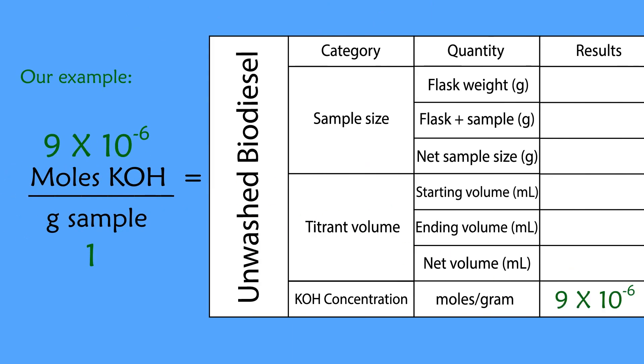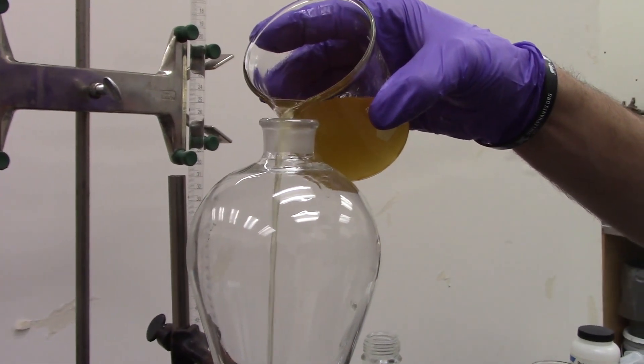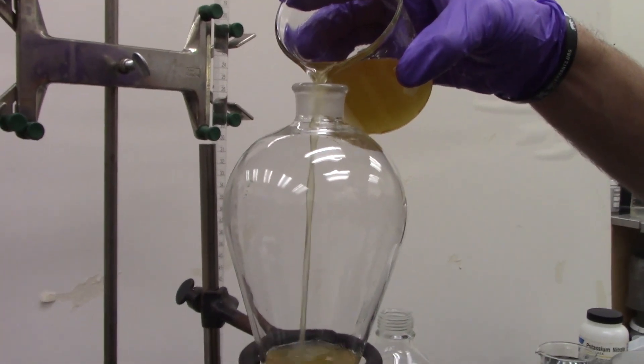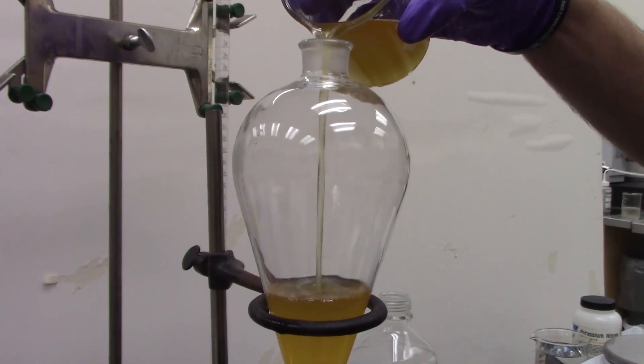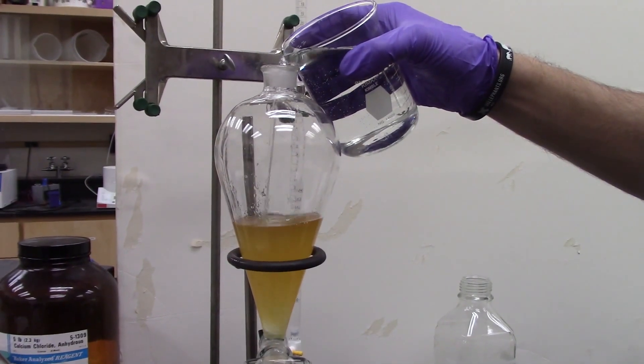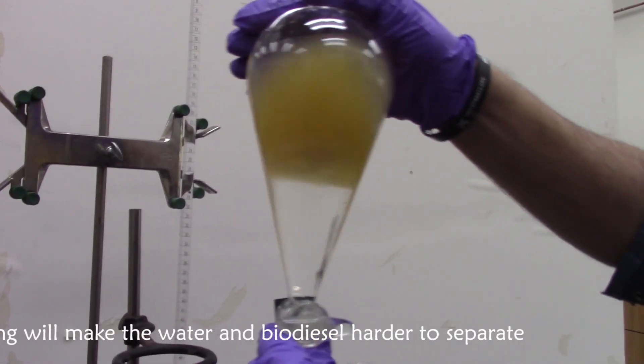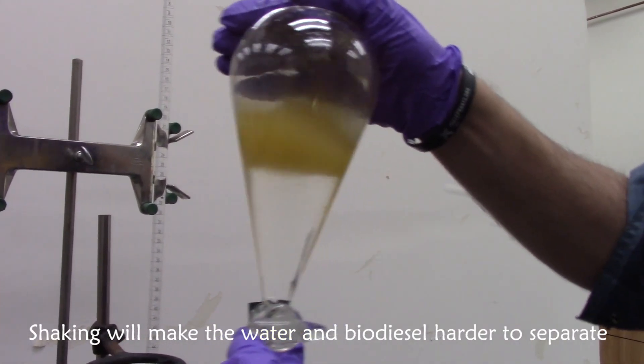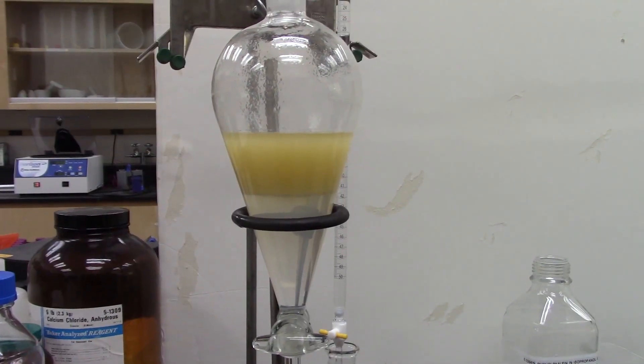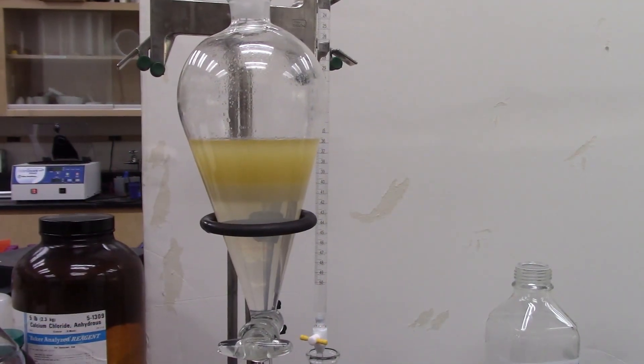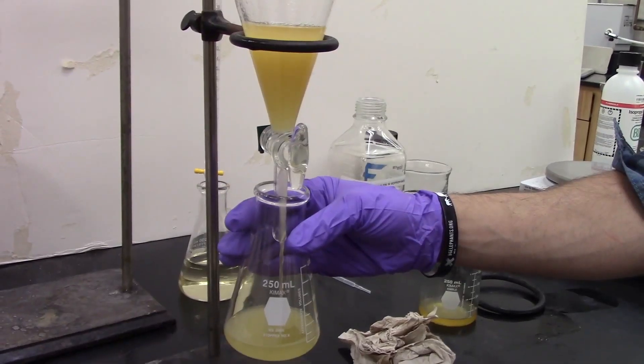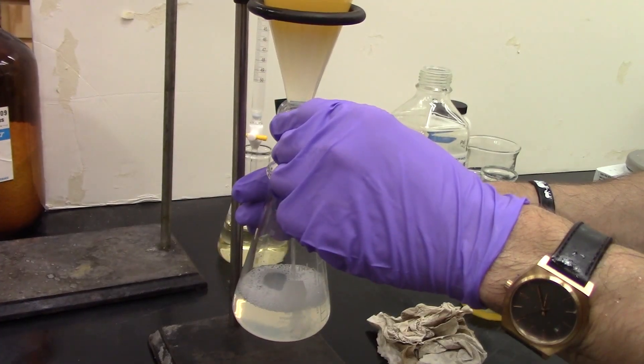Now you will wash some biodiesel. Place about 100 mL of unwashed biodiesel into a 500 mL separatory funnel. Add an equal volume of distilled or deionized water to the biodiesel. Agitate gently by rocking the funnel back and forth for two minutes, but do not shake. Let the water separate for five to ten minutes. Save the washed biodiesel and separated wash water.